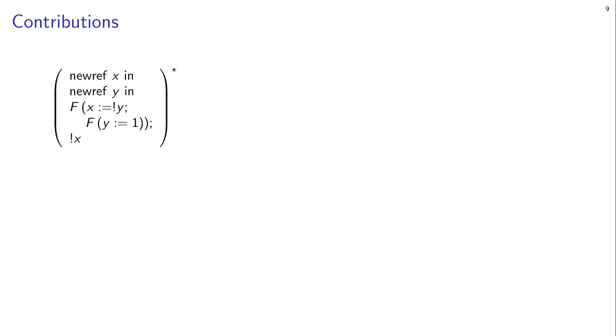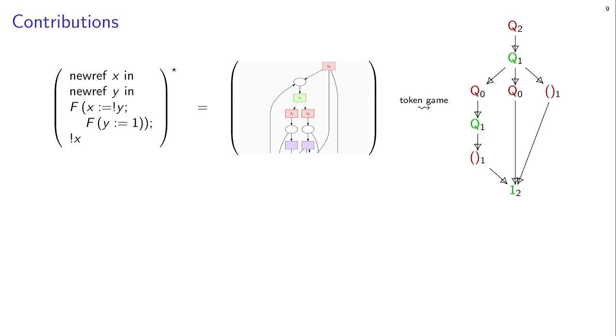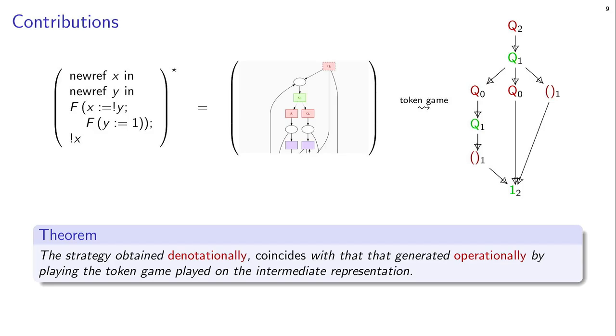So that's one of the problems we address in this paper. So what we propose to do is we start with the source code, and we first provide a compositional translation. So we transform it into an intermediate representation, which is a kind of graph. It's really a Petri net, so I'll come back to that later. And then this graph representation has a simple operational semantics, a token game, which will really produce operationally the diagram that I started with, or possibly some others, if there are other executions. And then we prove a theorem that tells us that the strategy you obtain denotationally by the interpretation in concurrent game semantics is the same. It coincides with the one that is generated operationally by playing the token game on this intermediate representation. So additionally, we have implemented this. So there is a web application that you can access and play with online.